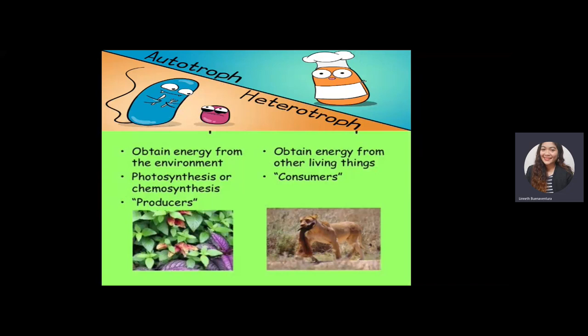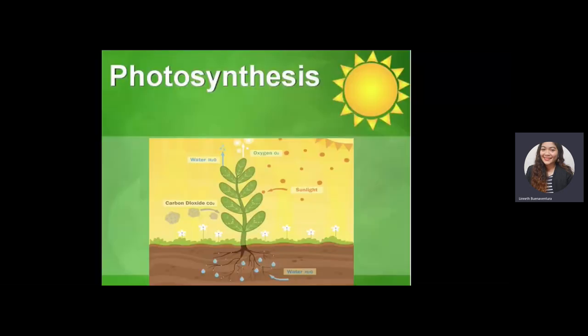Before we discuss photosynthesis itself, let's differentiate autotrophs and heterotrophs. These two organisms are different in regards to how they obtain energy. Autotrophs obtain energy from their environment using photosynthesis or chemosynthesis, and are commonly known as producers. Heterotrophs obtain their energy by consuming other organisms, and they are known as consumers.